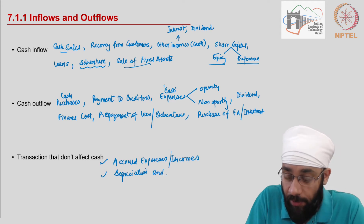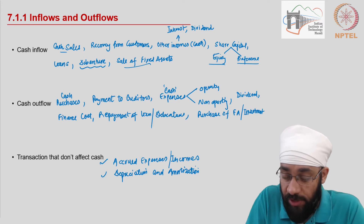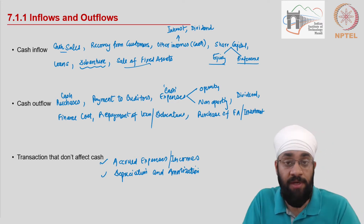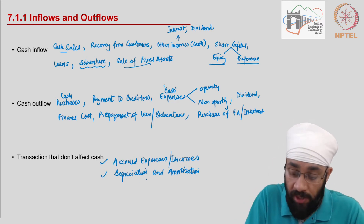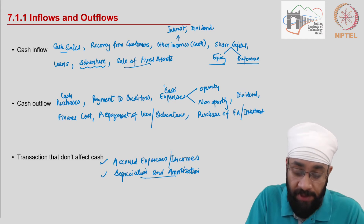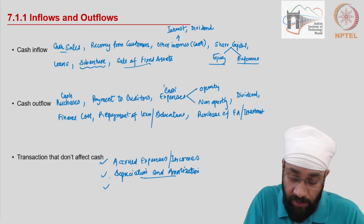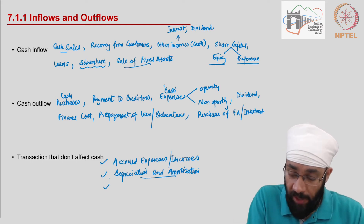Depreciation and amortization — as discussed earlier, amortization is depreciation on intangible assets. Both are similar in nature except they apply to different types of fixed assets.